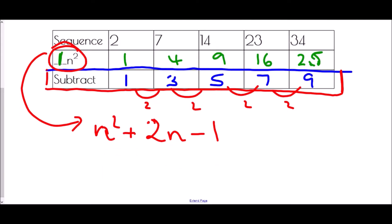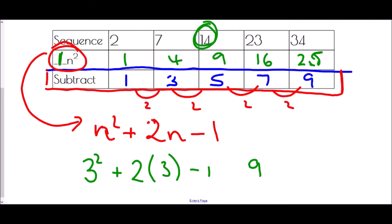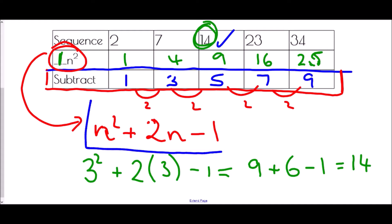Let's verify by substituting n=3. Three squared is 9, plus two lots of three is 6, take away one — that's 9 + 6 - 1 = 14. And yes, the third term in the sequence is 14, so the formula is correct.